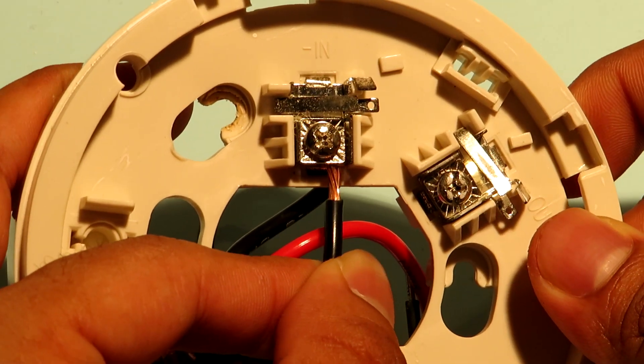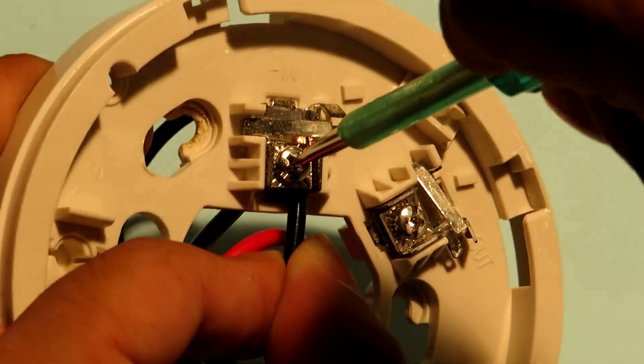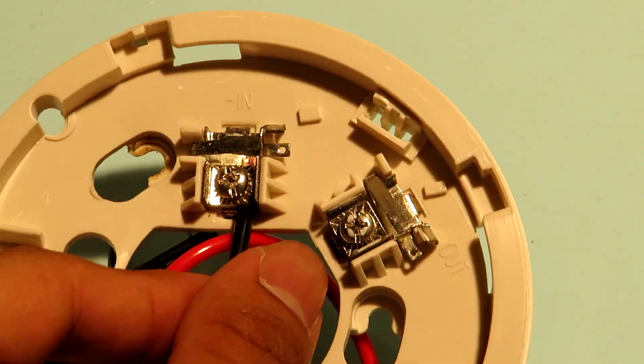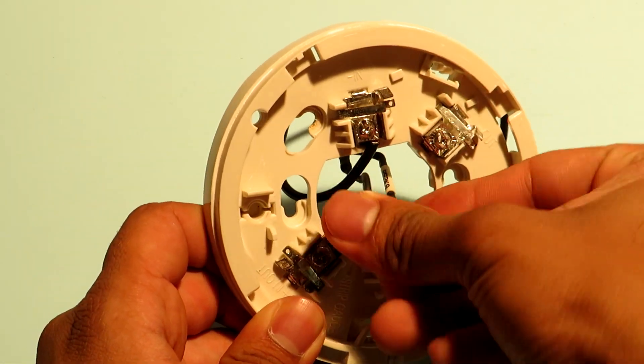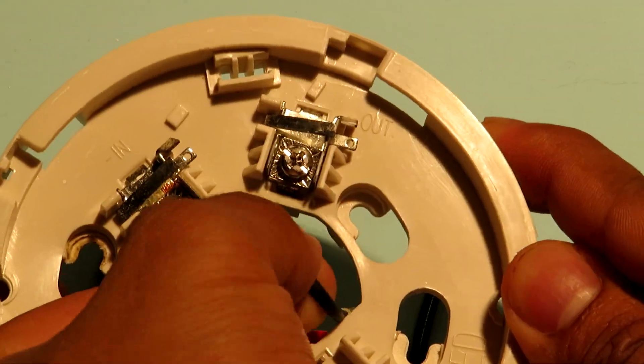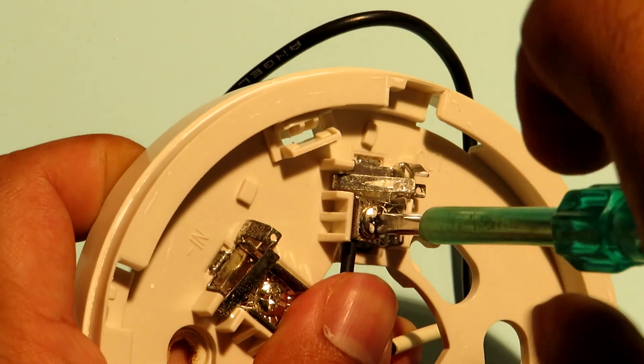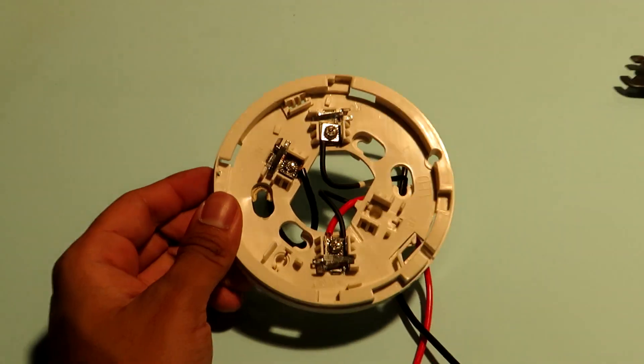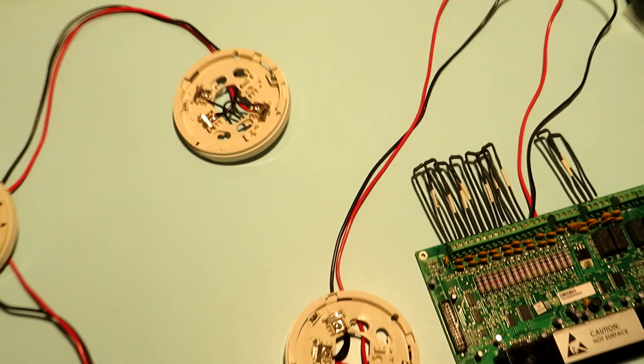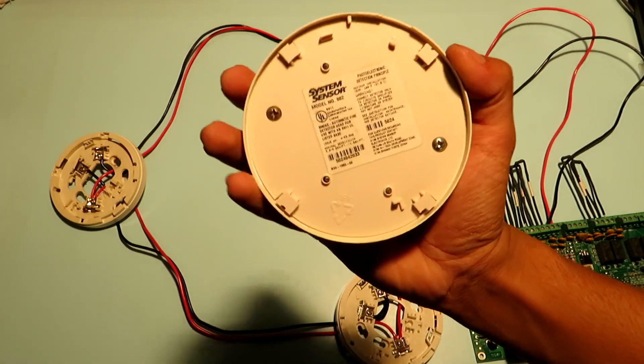The negative wire coming from the previous detector will go into the negative in terminal as usual. Now the last thing left to do is to connect the other end of our EOL resistor to the negative out terminal. In this way we are getting a fail safe mechanism so if anybody opens any detector in the line we'll get an indication in the panel. This also includes the last detector. So if someone opens the last detector also we are going to get an indication in the panel. So with this we have successfully connected the entire zone loop with our fire alarm control panel.